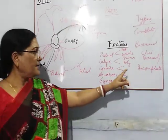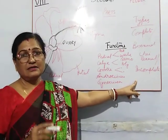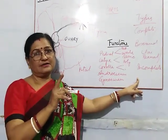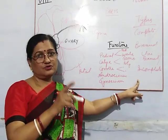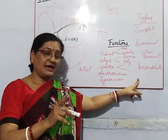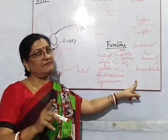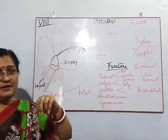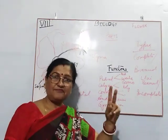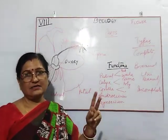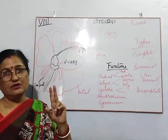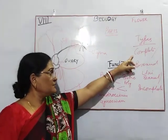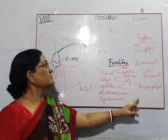For example, papaya plants are incomplete. That means one plant has only one type of flower — either it is a male plant with male flowers, or it is a female plant with female flowers. In the case of pumpkin, it has both types of flowers on one plant: one is male and another is female. So altogether, these are four types of flowers.